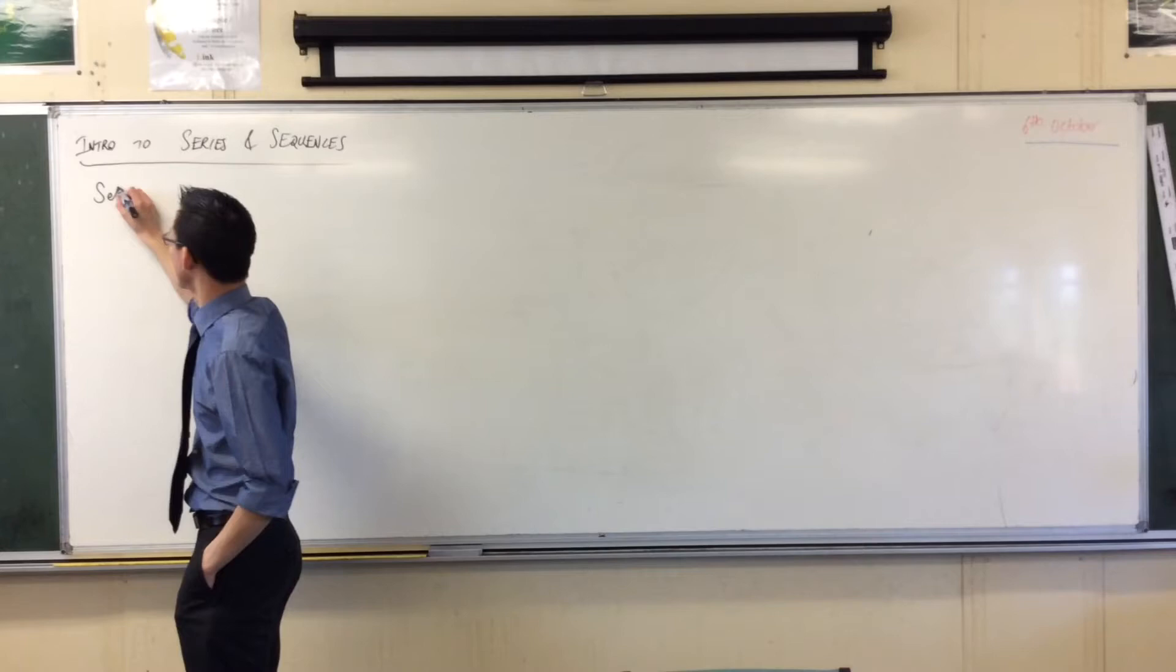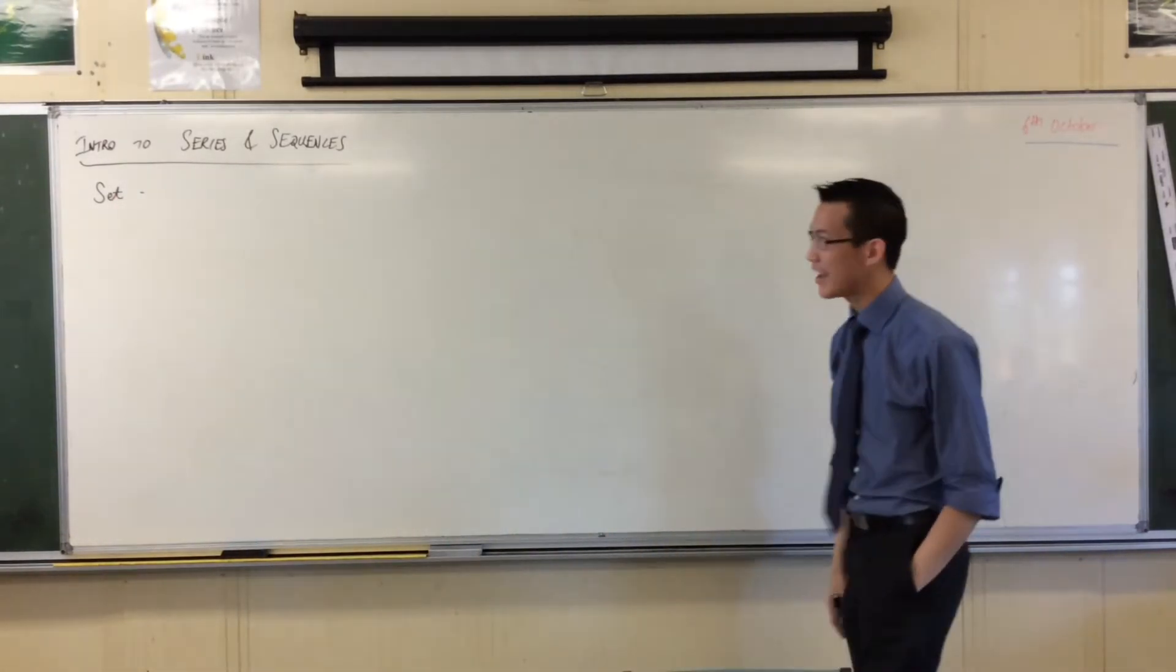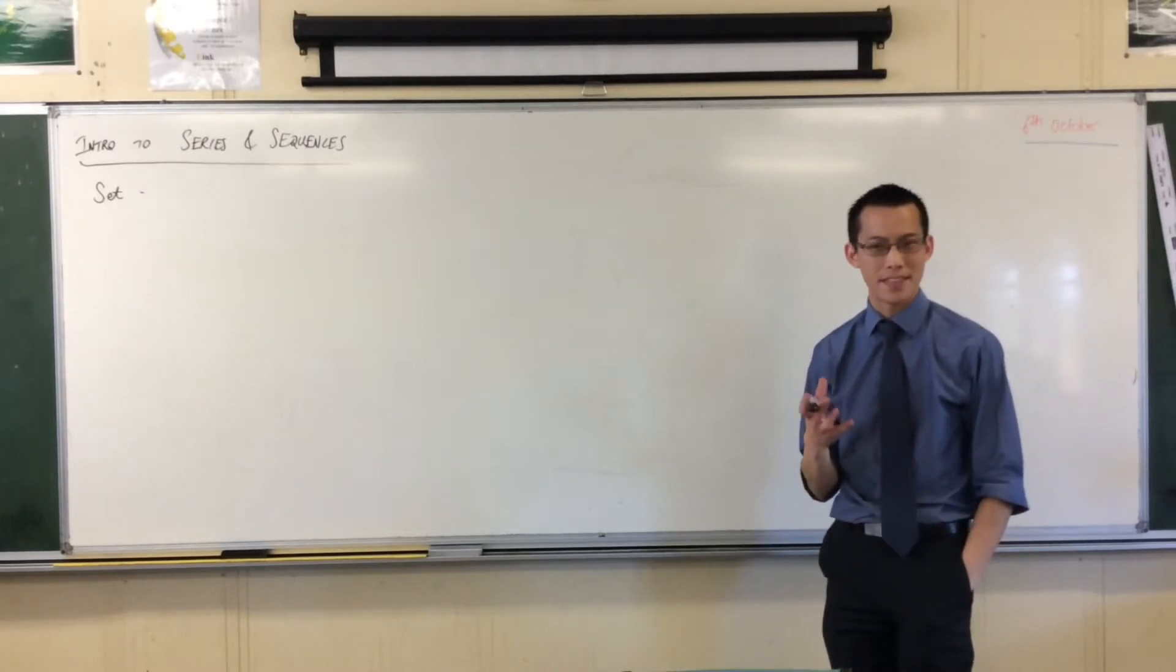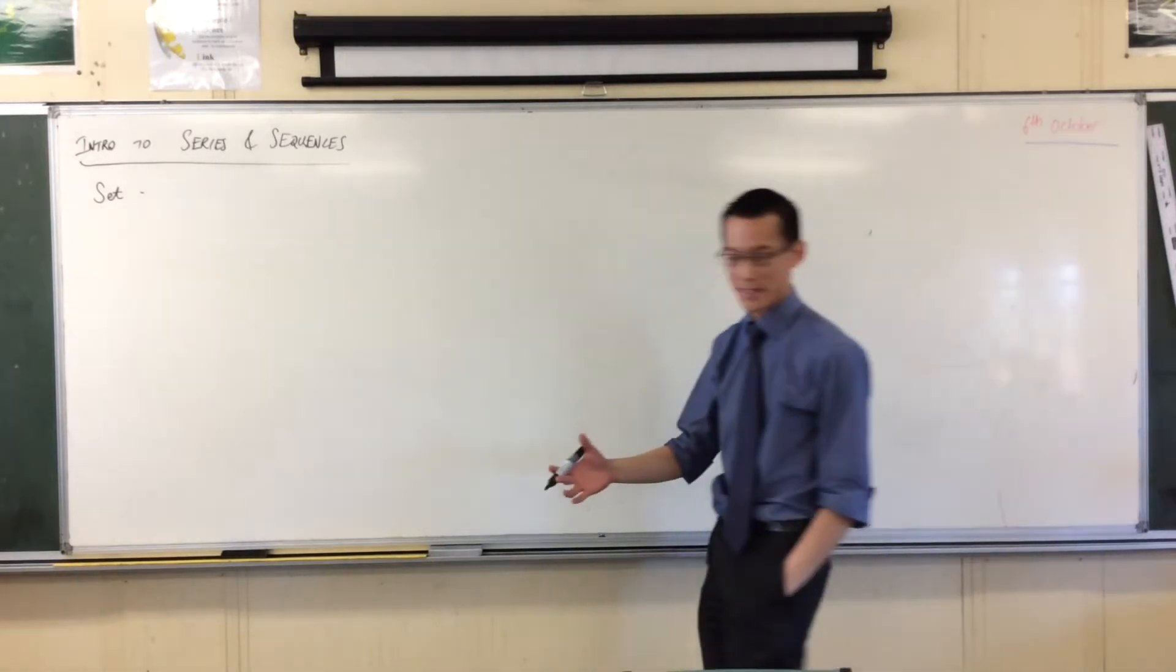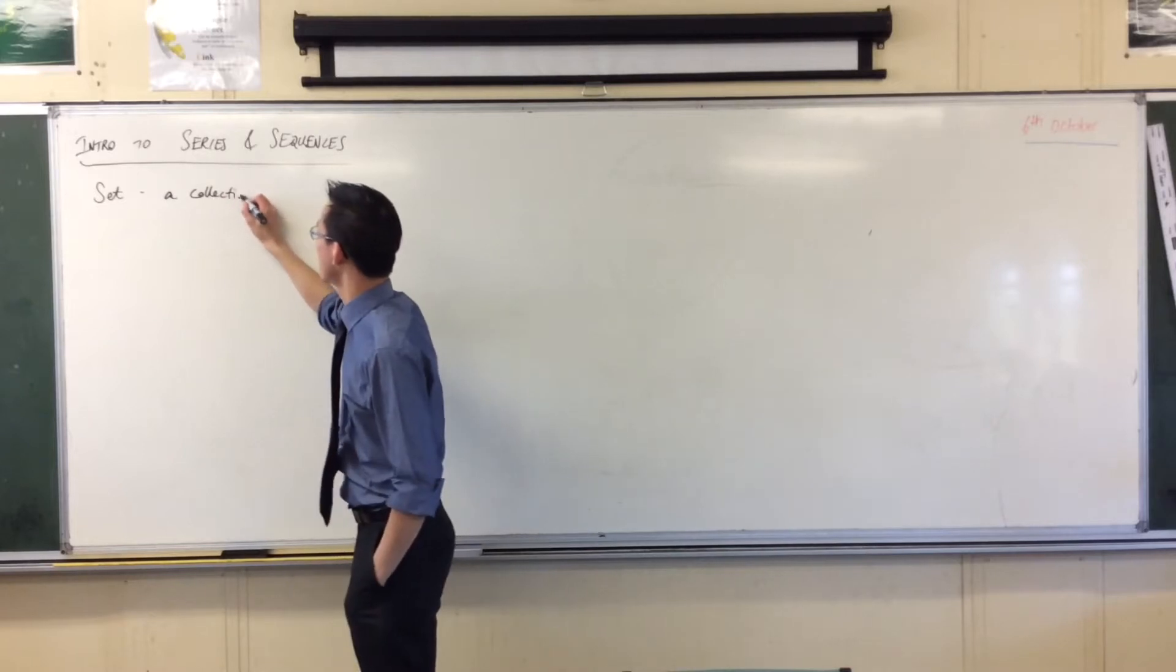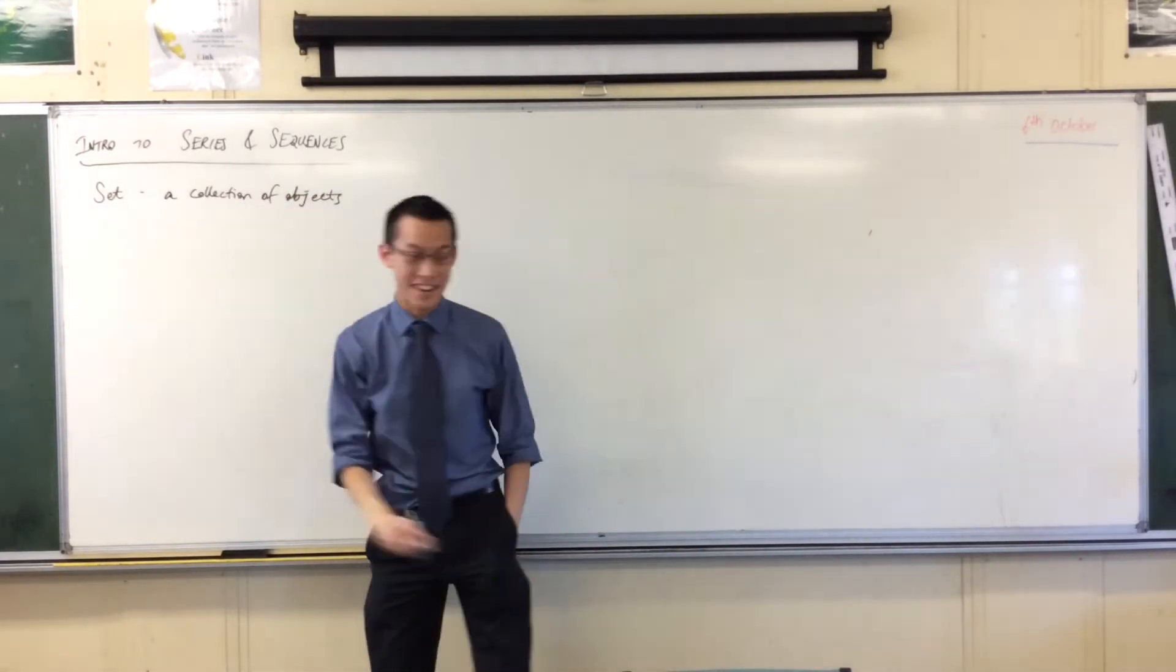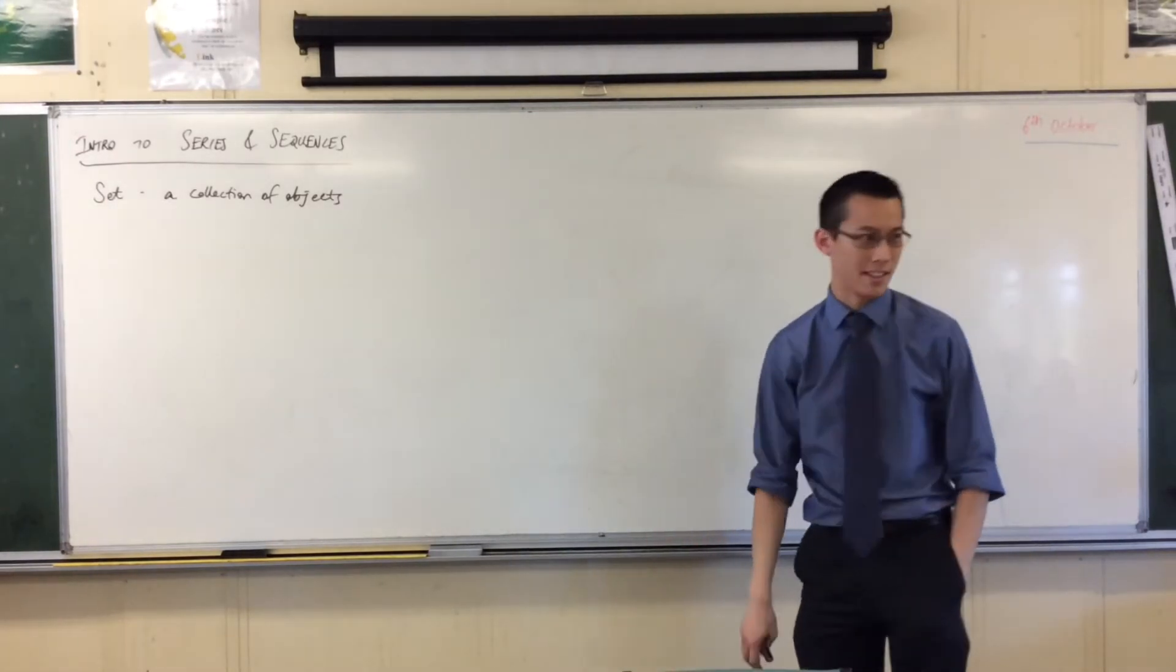I want to tell you about an object called a set. Some of you have heard of this before. A set is a very basic type of object in mathematics. Some might say it's the most basic, actually. A set is very simply a collection of objects, mathematical objects generally. And the main kind of mathematical objects that we're interested in are numbers, but sets can contain other things as well.